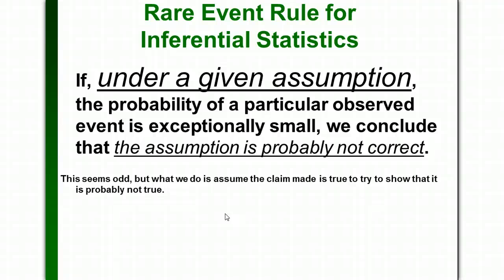It won't always be that way. For most of the time it is, but there will be times where we're wanting to show something is extremely rare, and that will support our claim rather than prove somebody else's claim wrong. But anyway, that's the way this hypothesis test works — we make an assumption, and then we prove that assumption can't be true.